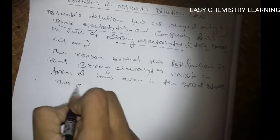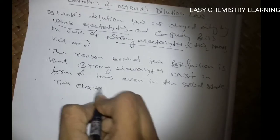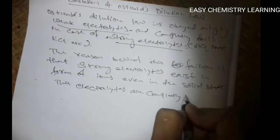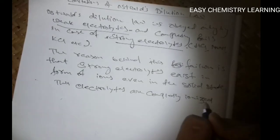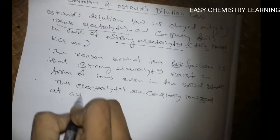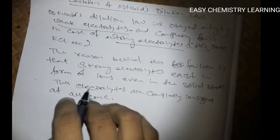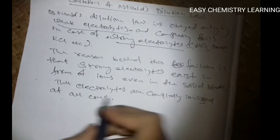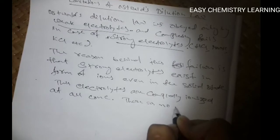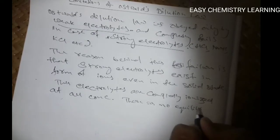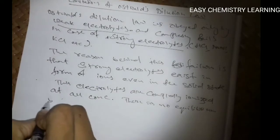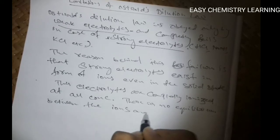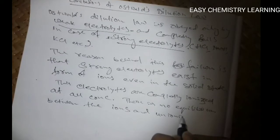And these electrolytes are completely ionized at all concentrations. So there is no equilibrium between the ions and the unionized molecules.